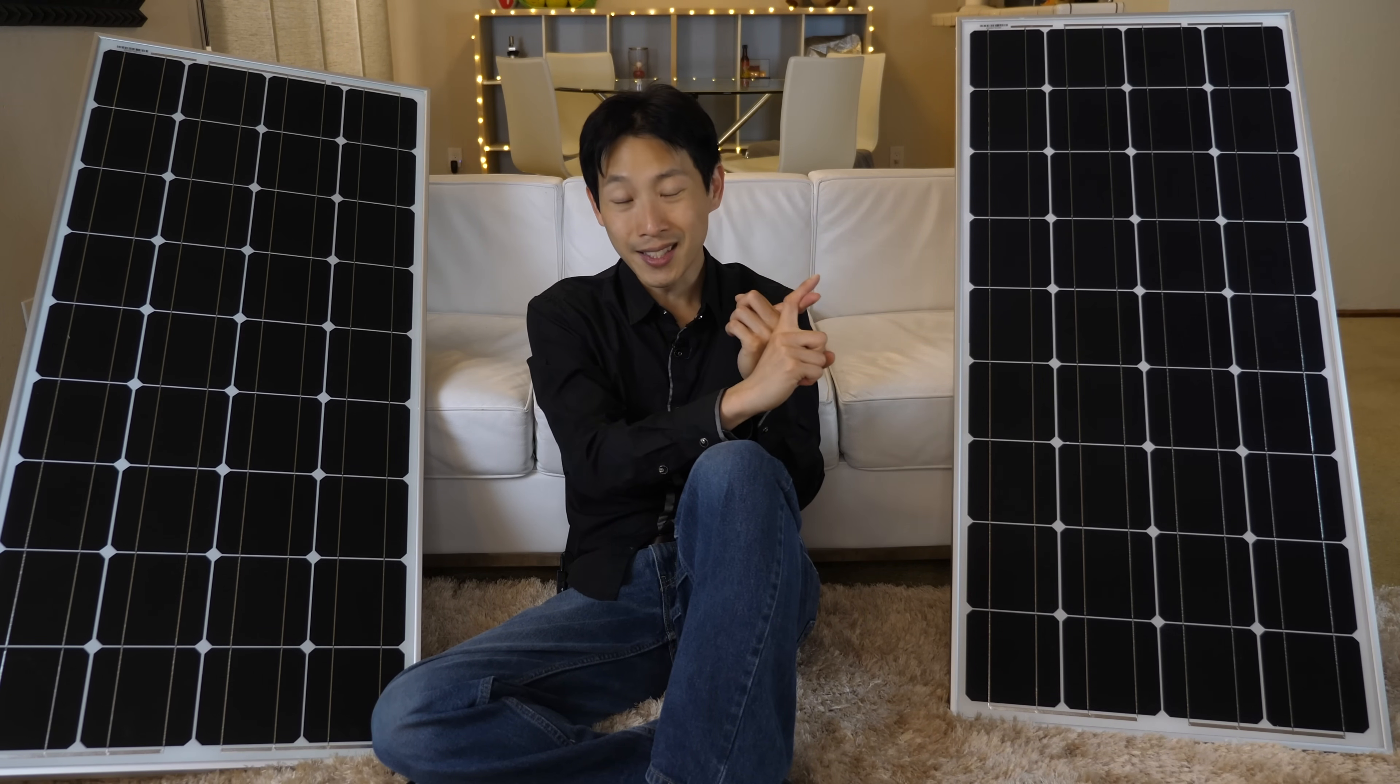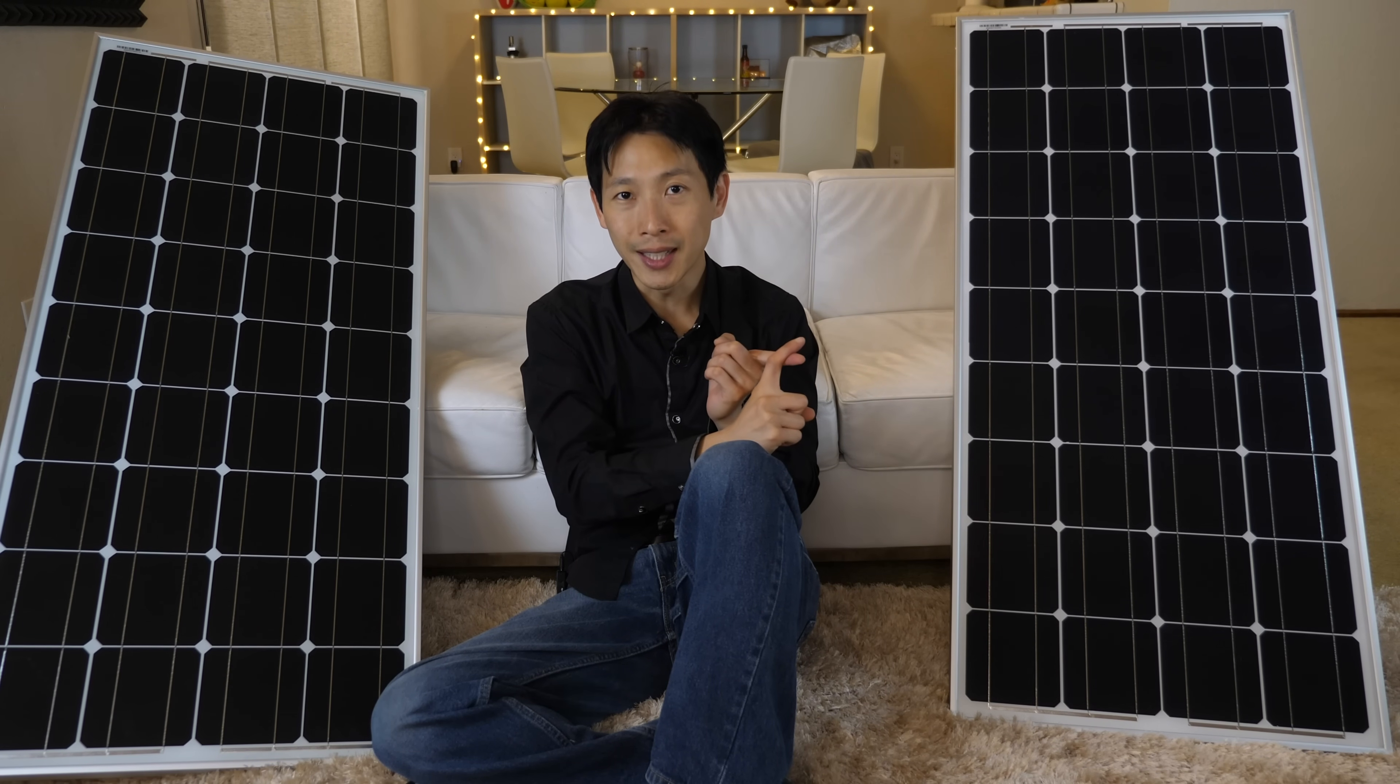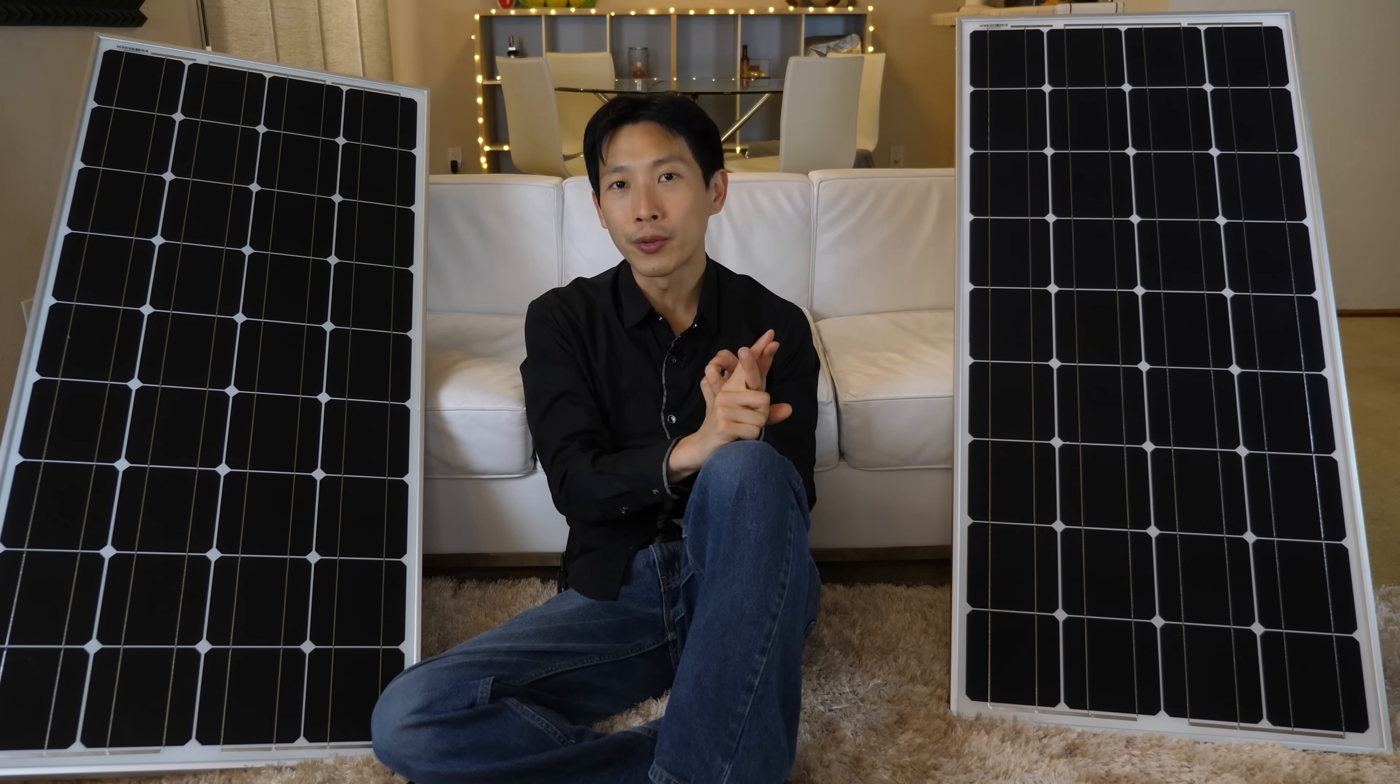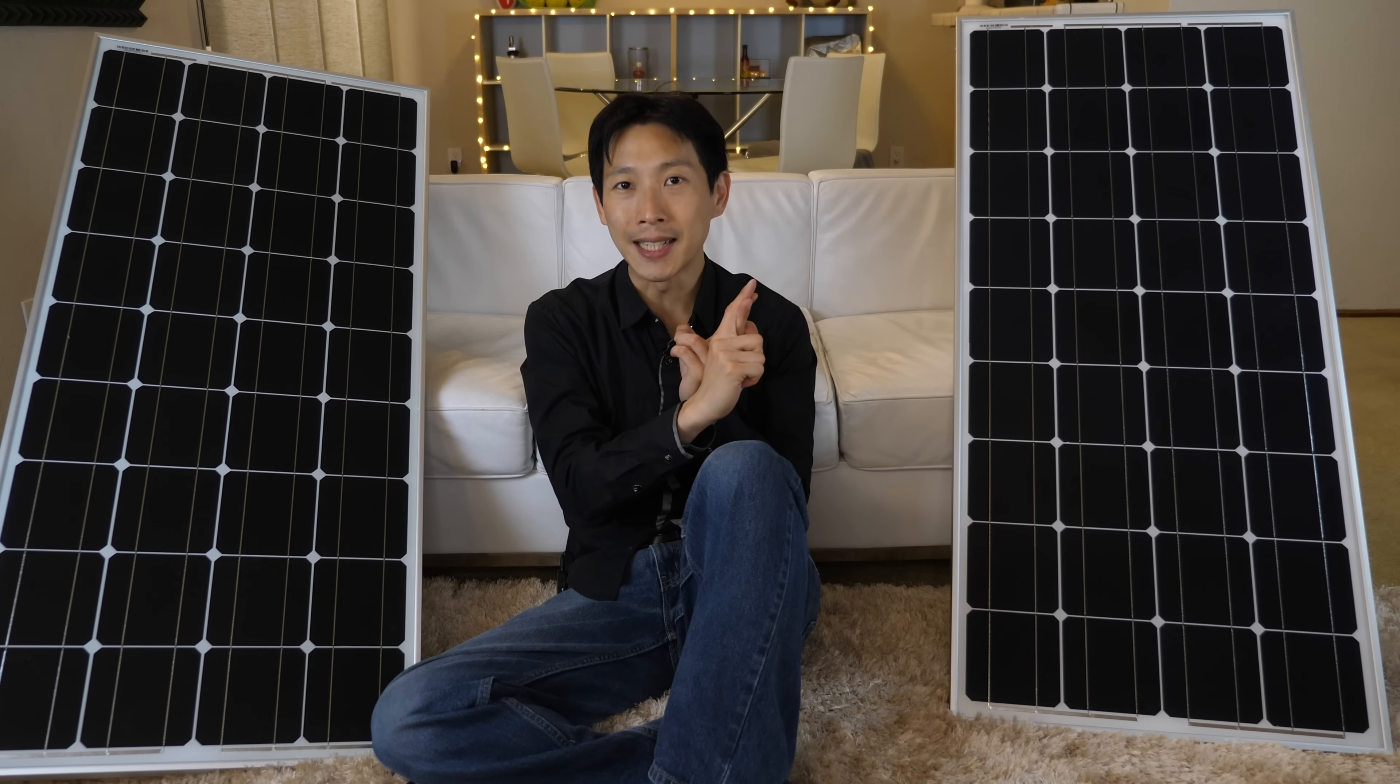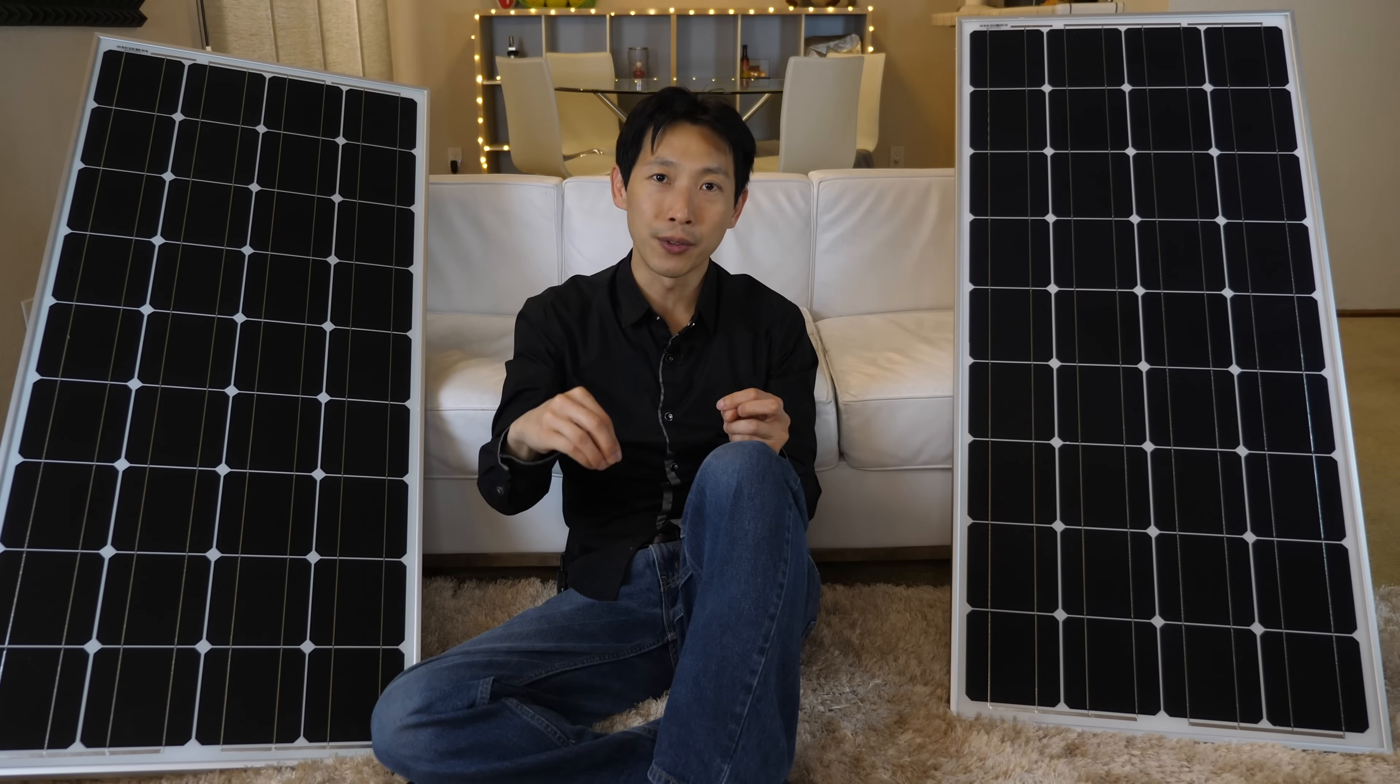Number one, people said this is a DIY system. You normally need contracts with your utility in order to tie something to their grid. Number two, if you do some sort of grid tie system, you definitely need a circuit breaker before it enters into the socket of your home.